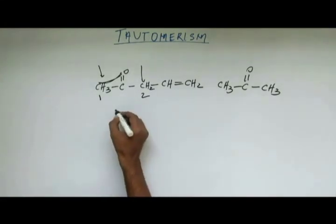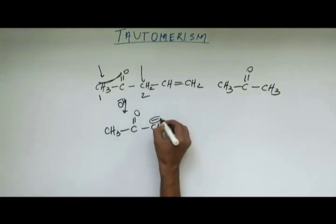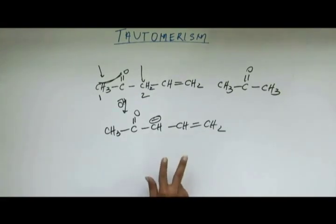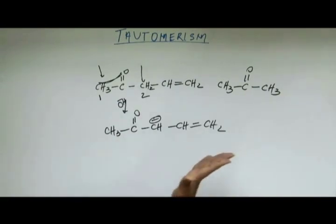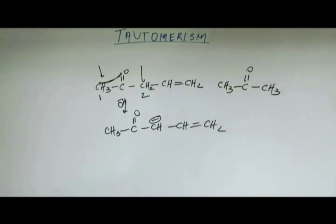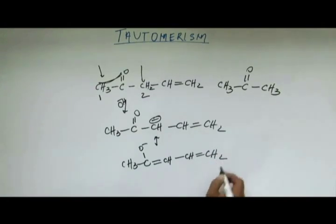The first step: the base will come and abstract a proton, and this conjugate base will be formed. In the second step, resonance will occur and the charge will get delocalized to the most stable position. Resonance will be on both sides — with the C=O and with the C=C. This negative charge is in cross conjugation, but to take the negative charge to the most stable position, we draw the resonating structure in which the negative charge is on oxygen.